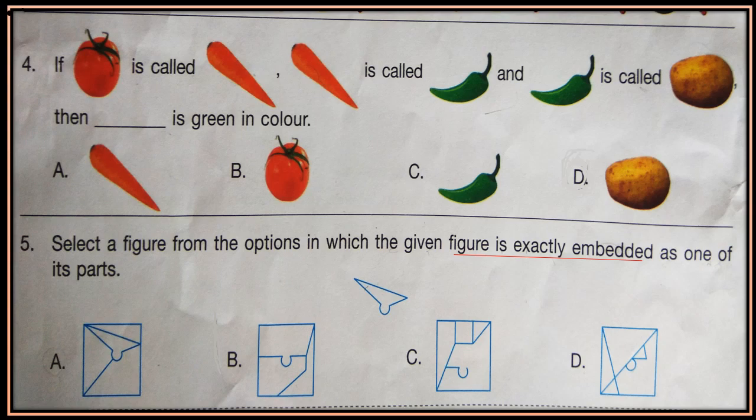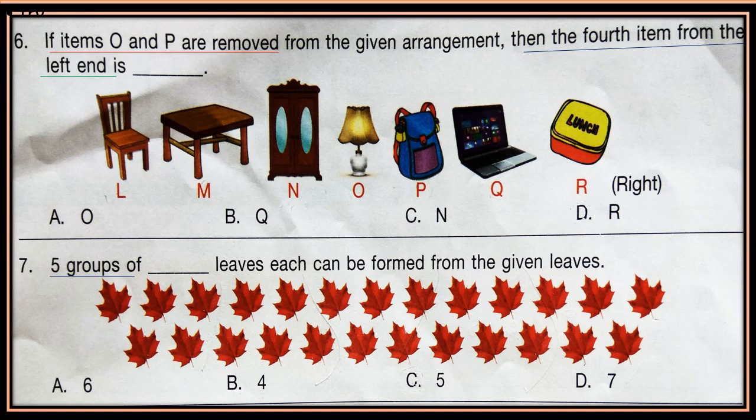Question 6. If items O and P are removed from the given arrangement, then the 4th item from the left end is? Now first cross the items O and P, then start from the left end and select the 4th item.